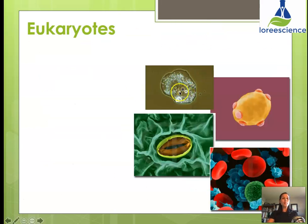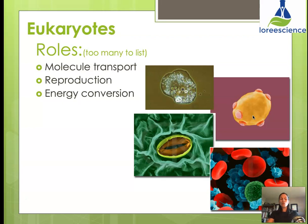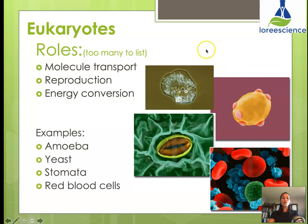Because eukaryotic cells have membranes and compartments, they can specialize — taking on a specific structure for a specific job. Roles are too many to list, but major ones include molecule transport (such as red blood cells carrying oxygen), reproduction (like sperm or egg cells), and energy conversion (like plant cells that photosynthesize to convert sunlight into food energy). Common examples include amoeba, yeast cells, stomata (plant cells on leaves), and red blood cells.